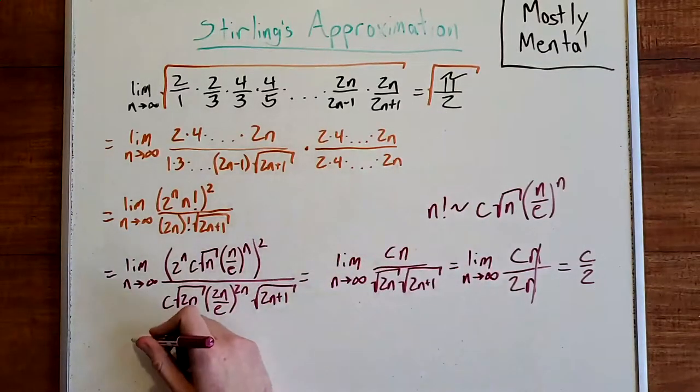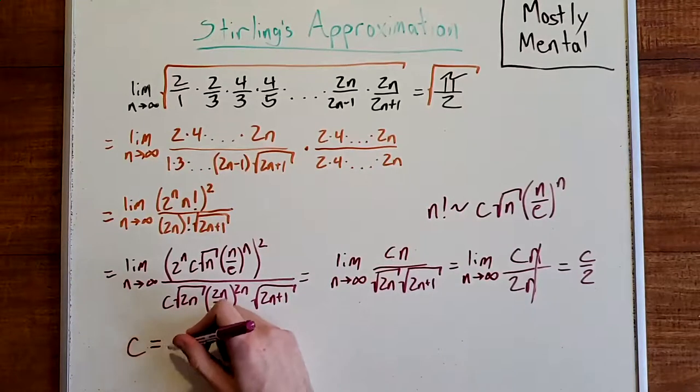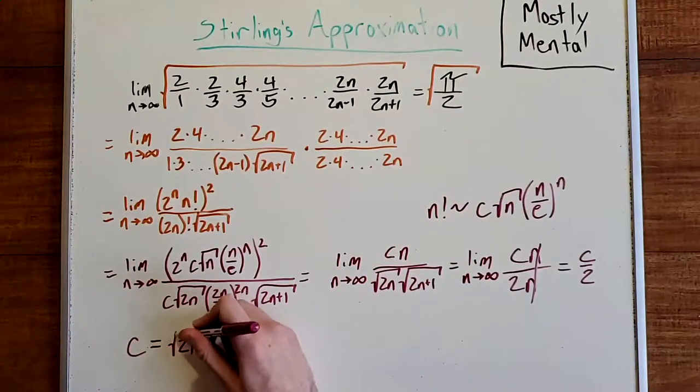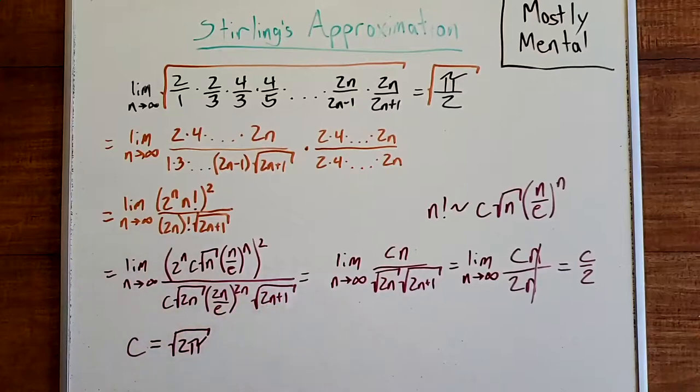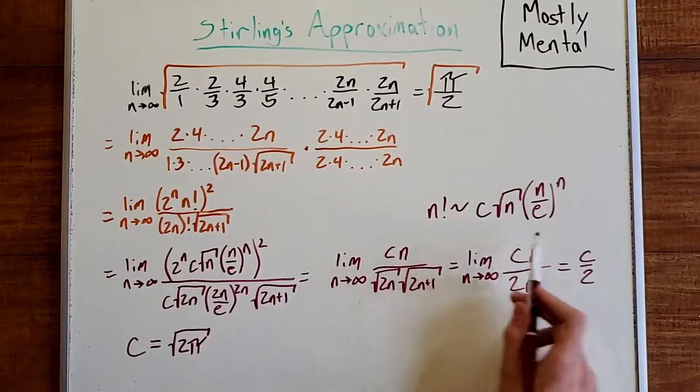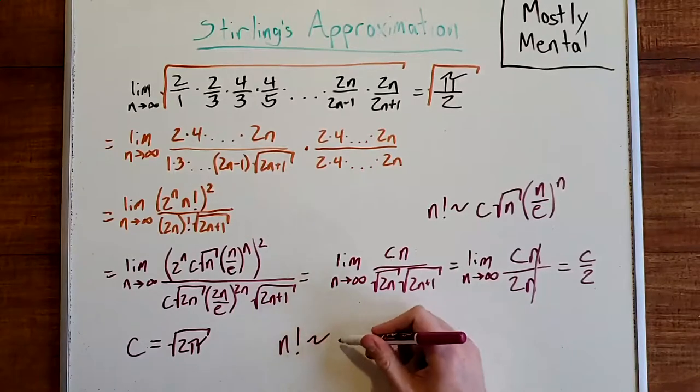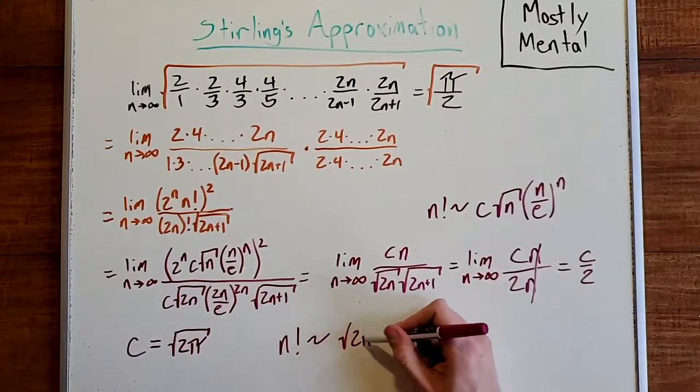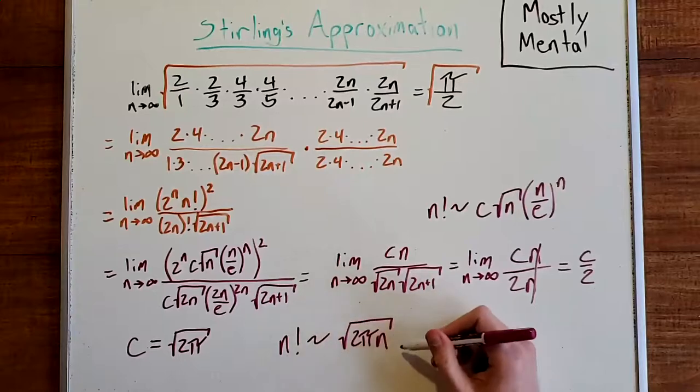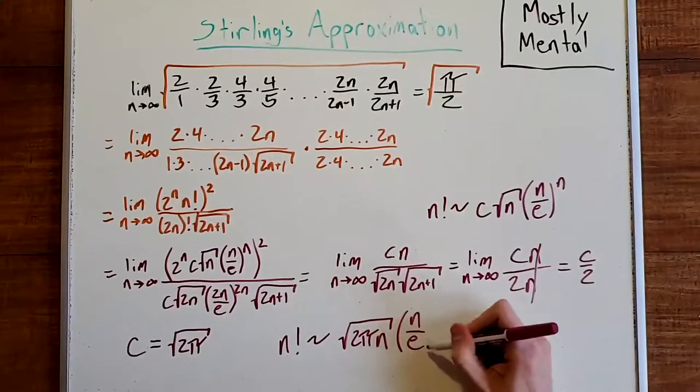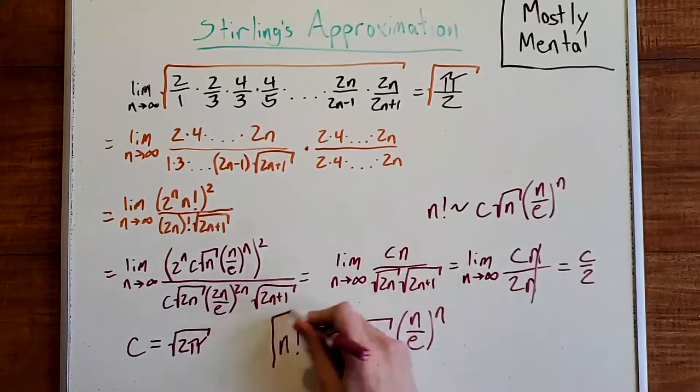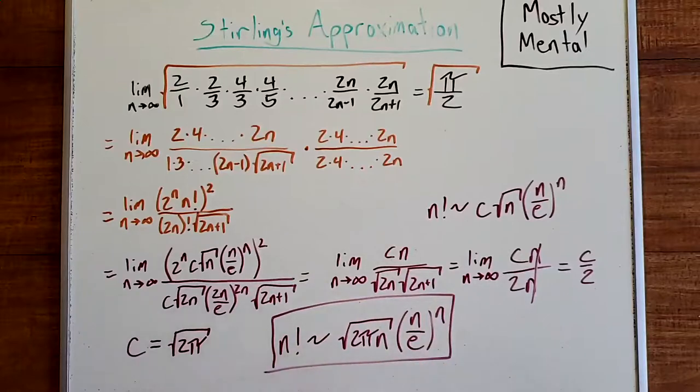And as we saw a moment ago, this whole thing is equal to the square root of pi over 2. So, solving, we get c is equal to the square root of 2 pi. Plugging that back into our estimate here, we get n factorial is approximately equal to the square root of 2 pi n times n over e to the n. And that is Stirling's formula.